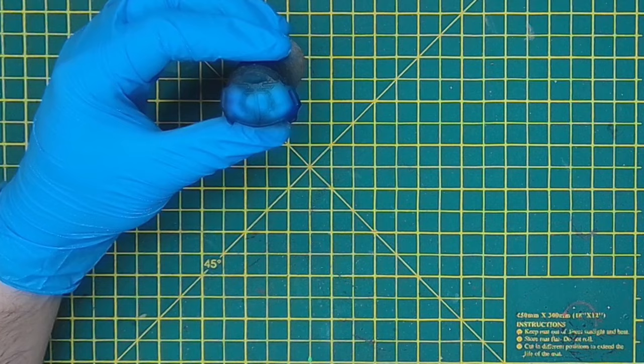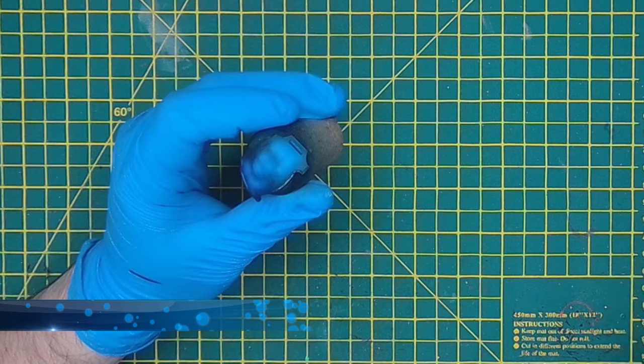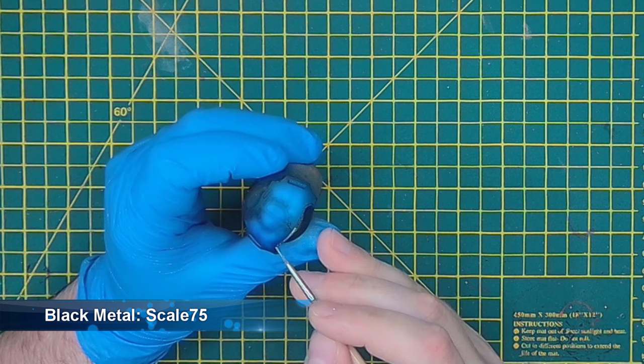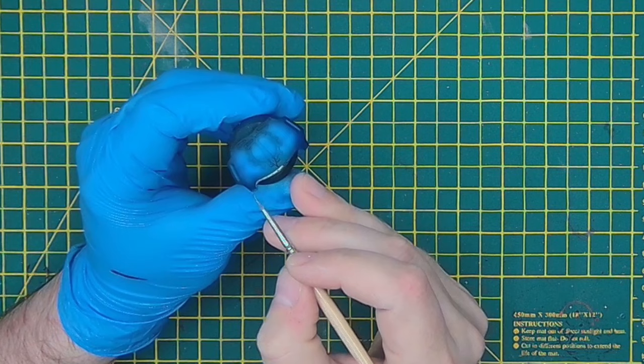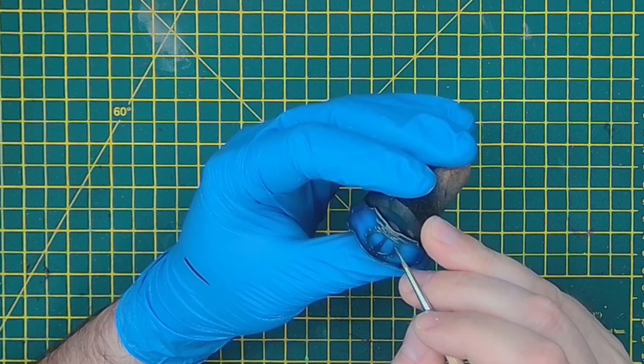At this point I decided to go in and block out some of the metallics. For this one I'm using my go-to metallic paint range which is the Scale 75 Metal and Alchemy range, this is Black Metal. I'm just using this to block in the base metallics all over the pad. Already you can see this is almost battle ready and this would look good on a titan just as is.